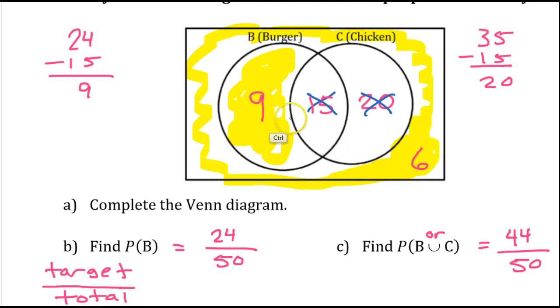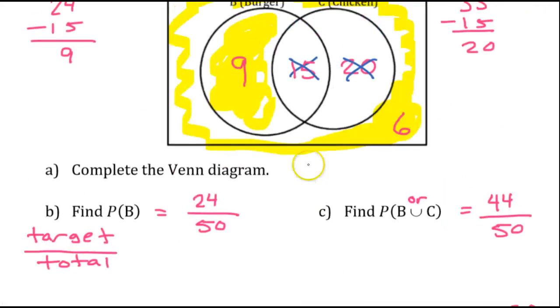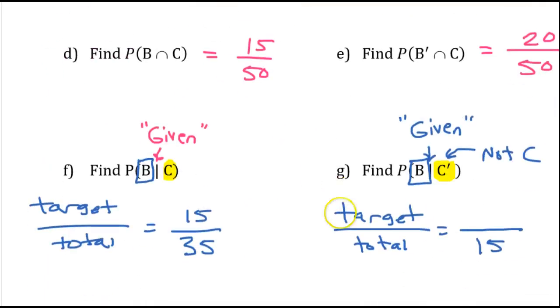The new total is going to be 15. It's the remaining numbers 9 and 6. So, the new total is 15. The target is the B part. The B part is the 9. So, 9 over 15.